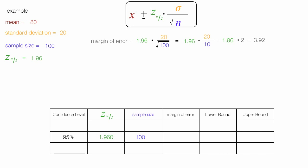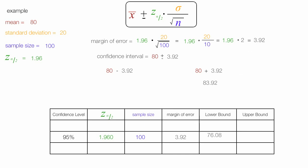Now I'll calculate the confidence interval. That's equal to 80, which is the mean, plus or minus the margin of error. So it's 80 plus or minus 3.92. The lower bound is 80 minus 3.92, which equals 76.08, and the upper bound is 80 plus 3.92, which equals 83.92.